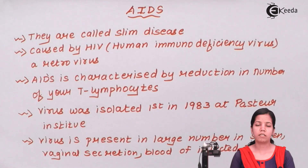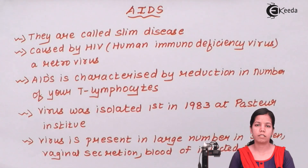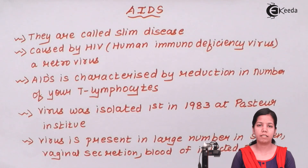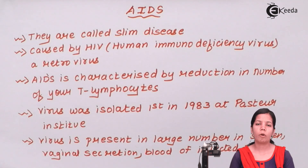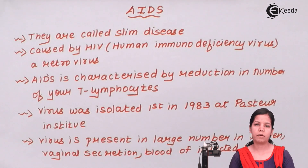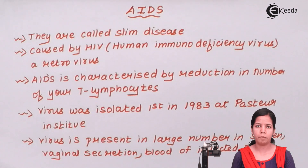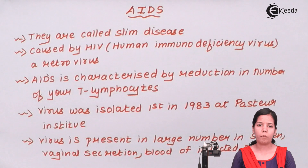The preliminary test available for AIDS is called the ELISA test, whereas the confirmatory test is the Western Blot test. In between, a CBC is also done. The medicines available for AIDS include AZT medicines, which basically stop the retrovirus by inhibiting the reverse transcriptase enzyme. Without reverse transcriptase, the HIV virus cannot convert its single-stranded RNA into double-stranded DNA. These medicines don't kill the virus completely — they can only stop it to a certain level.